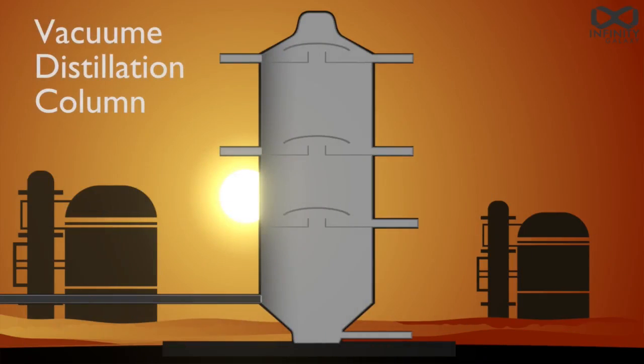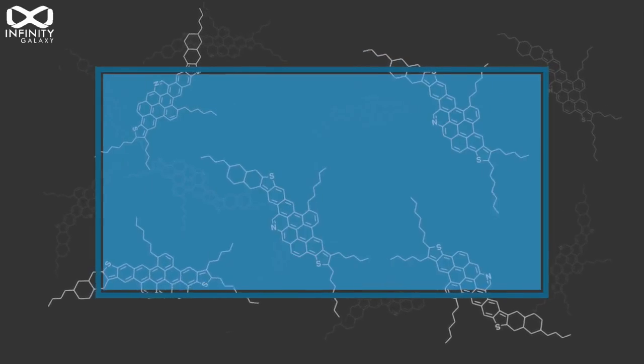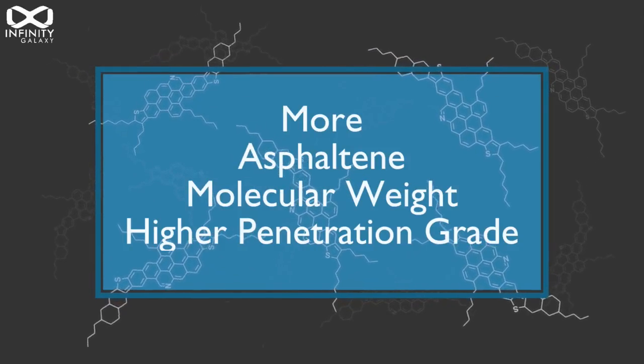In the final stage, the vacuum bottom is transferred to the vacuum distillation column to separate the lighter petroleum from the heavier one by blowing hot water steam into it. The outcome of this process is a type of bitumen which has more asphaltene and molecular weight with higher penetration grade.